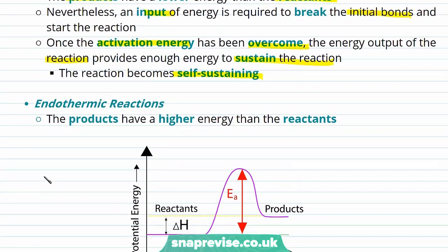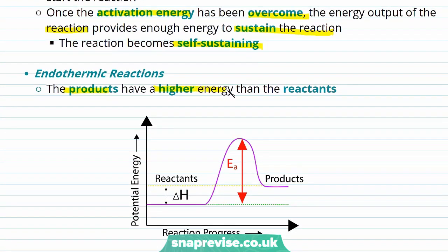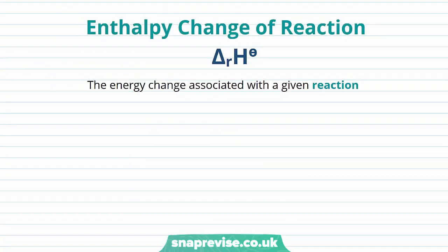For endothermic reactions, the products have a higher energy than the reactants, with the activation energy in the middle that must be overcome before the reaction can occur. Now let's look at the enthalpy change of reaction. You'll be familiar with the notation: delta for a change, H for enthalpy, the superscript plimsoll sign for standard conditions, and the small r signifying the enthalpy change of reaction — which is the energy change associated with a given reaction.